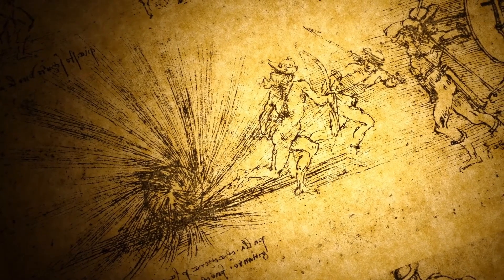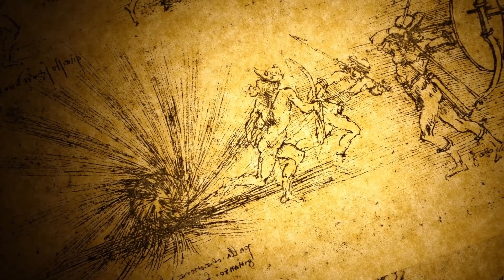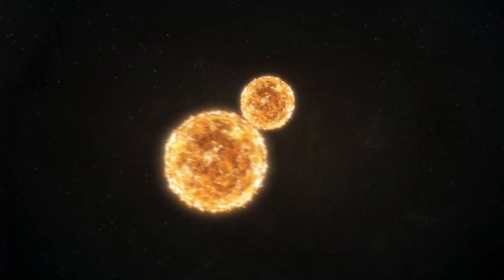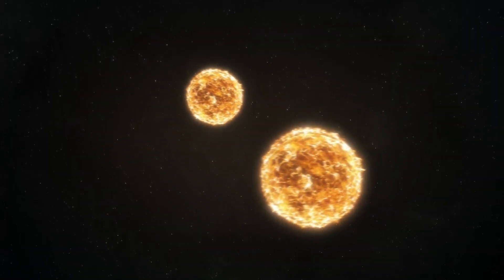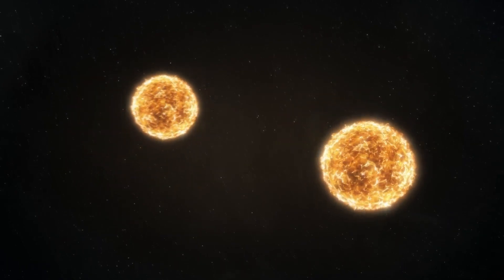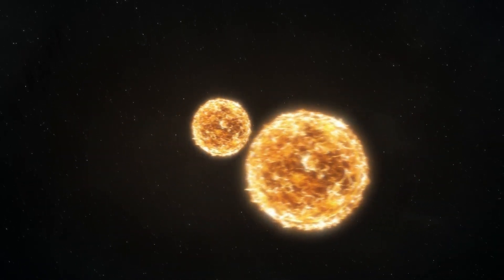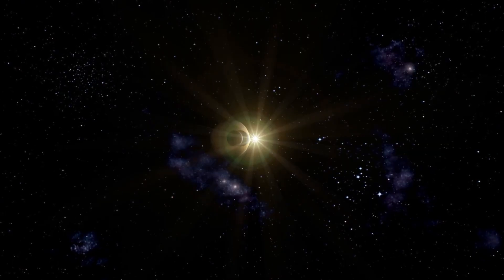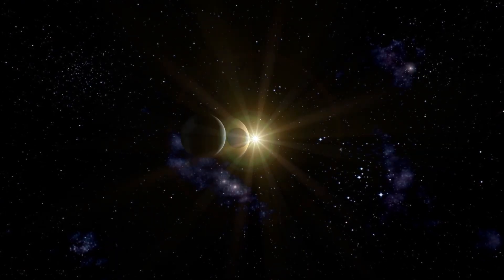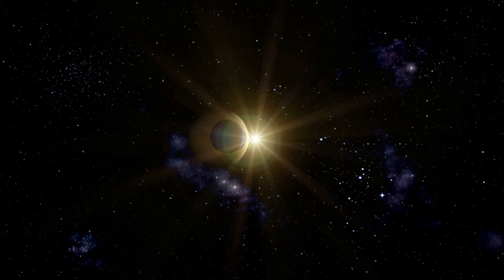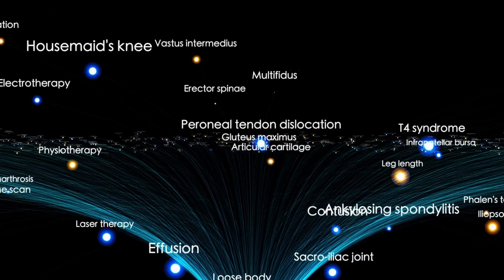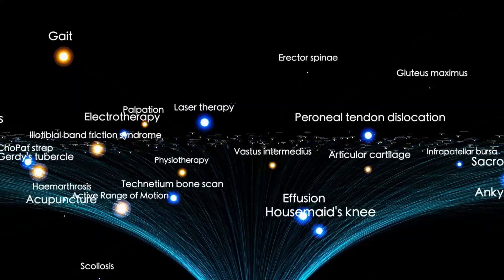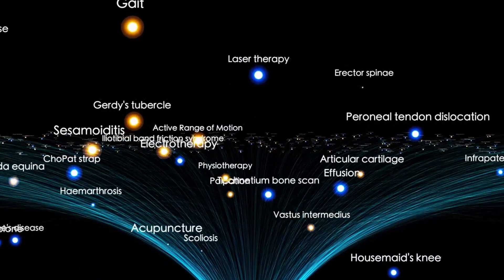On the night of August 6, 2025, Webb's NIRSpec targeted 3I Atlas from its stable vantage at L2, 1.5 million kilometers from Earth. The first surprise came instantly. The coma was not water-driven, as with nearly all comets observed since Halley's return in 1986. Instead, carbon dioxide dominated the emission spectrum with water barely detectable. Ratios reached as high as 8:1, unheard of in comet science. This was not just strange, it was alien chemistry.